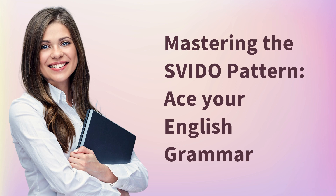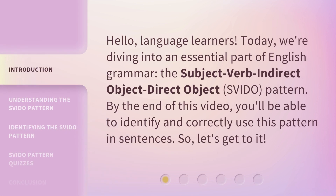Mastering the SVIDO Pattern — ace your English grammar. Hello, language learners. Today, we're diving into an essential part of English grammar: the Subject-Verb-Indirect Object-Direct Object, or SVIDO, pattern. By the end of this video, you'll be able to identify and correctly use this pattern in sentences. So, let's get to it.